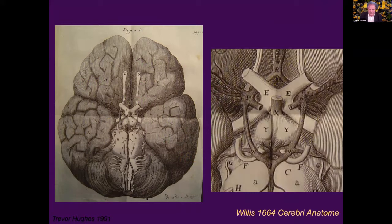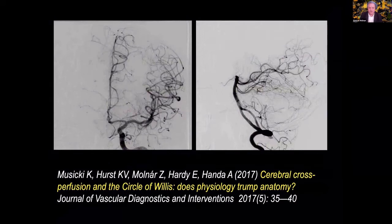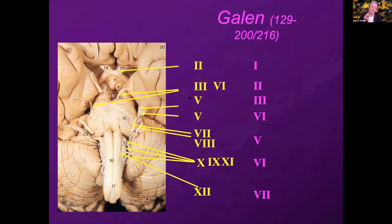This is still anatomically accurate, although there are some issues I could point out which are inaccurate in these drawings. But since it's a birthday party, I don't want to ruin it with those anomalies. Willis described the case of a patient who had stomach cancer and an almost completely occluded right vessel, describing how nature had provided a sufficient remedy against the risk of apoplexy. As you can see from today's discussions about hemispherectomy and no development of the whole hemisphere, this circle is not always working and there is huge anatomical variation, which Ashok Honda studied here in Oxford. If you perform endarterectomy, you need to know these variations before you start surgery.